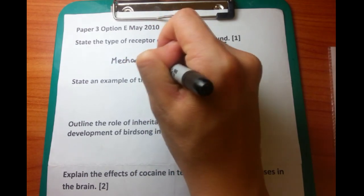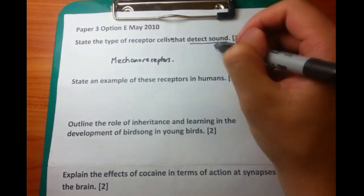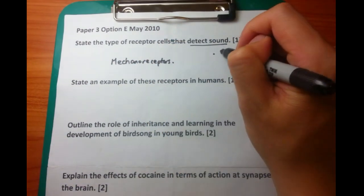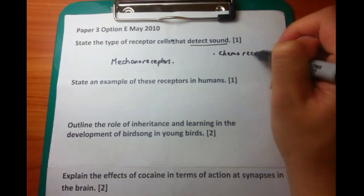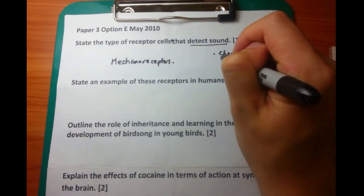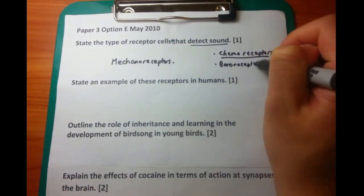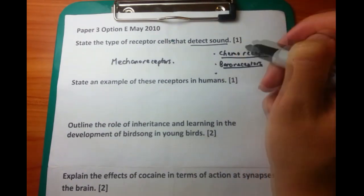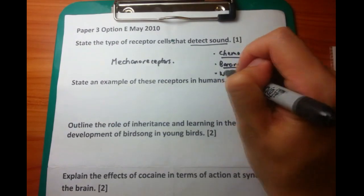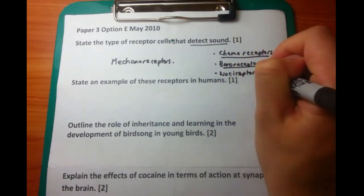Easy. You need to know that they're mechanoreceptors. And something which is a little less easy is to know the other types of receptors which are available. These are chemoreceptors, which detect chemicals, baroreceptors, which detect changes in pressure, and nociceptors, which detect pain.